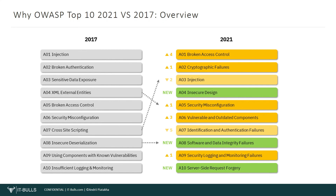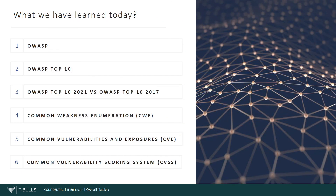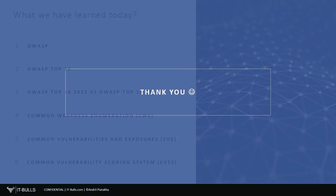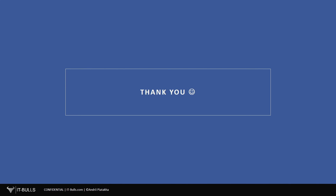That's all I wanted to share with you today. Let's recap what we have learned in this lesson. Today we learned what OWASP is. Now you know what OWASP Top 10 is and why it is important. We reviewed categories from OWASP Top 10 2021 and compared them with categories from OWASP Top 10 2017. We also learned what common weakness enumeration is, what common vulnerabilities and exposures are, and what common vulnerability scoring system is. That's all for this lesson. Thanks a lot for your attention. Have a great day and see you in the next lesson!